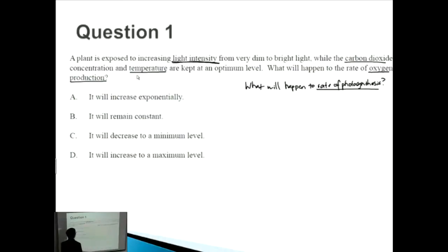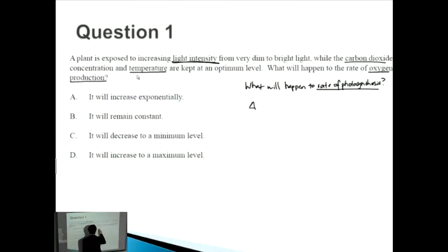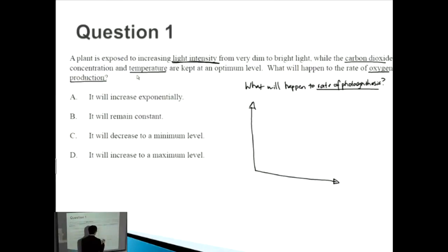Light intensity is our independent variable, and as we increase it from very dim to very bright light, if we fix all the other variables, then because light is an important part of photosynthesis — it's one of the substrates — we will have a linear increase in photosynthesis.